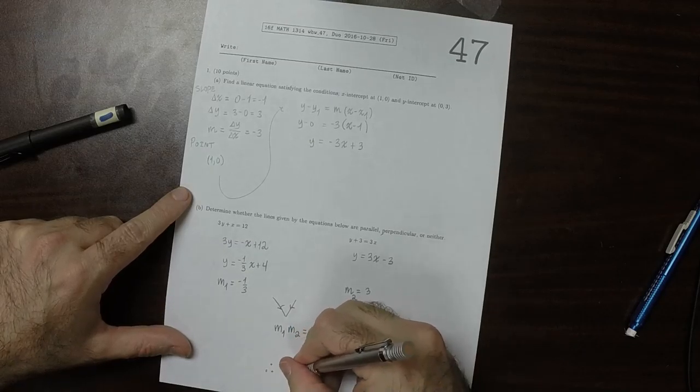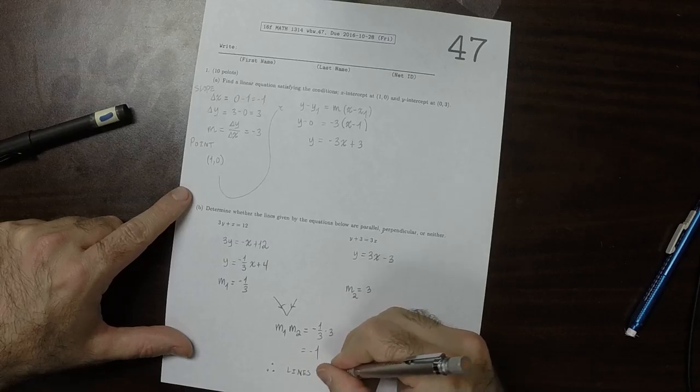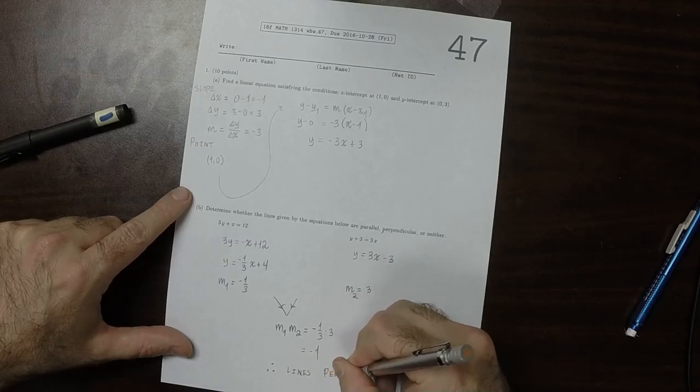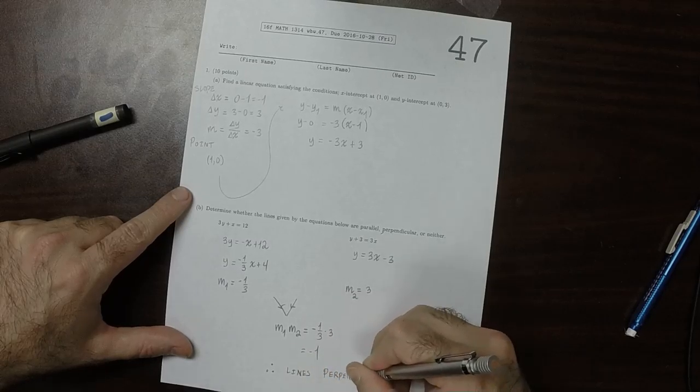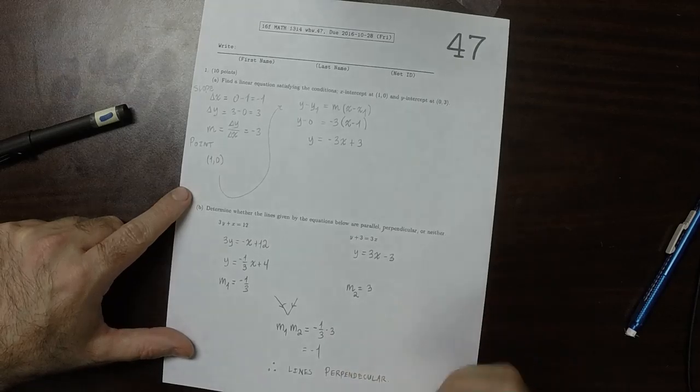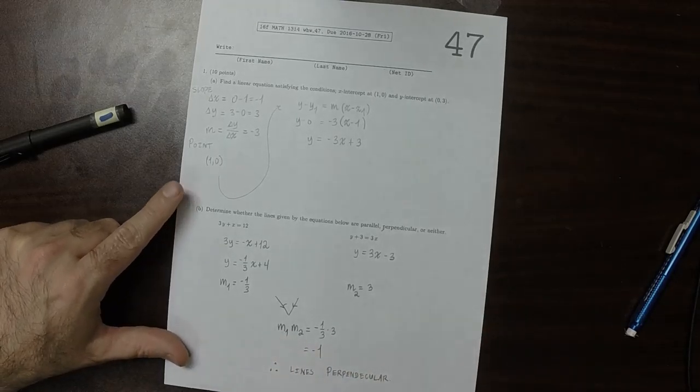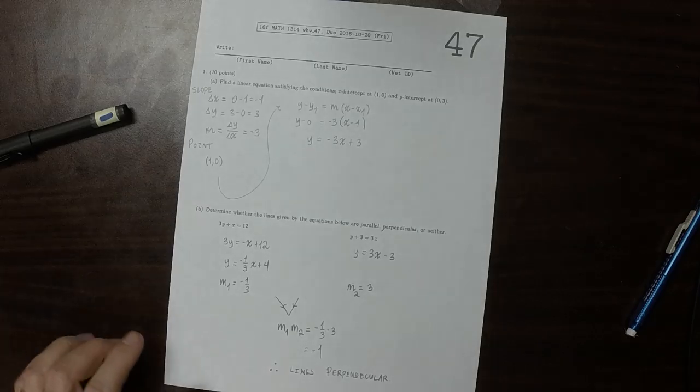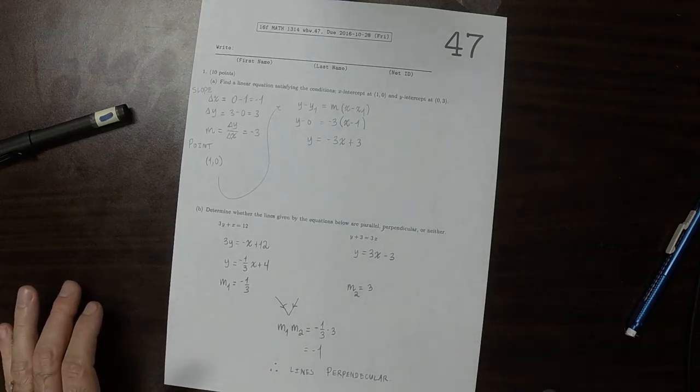And therefore, these lines are perpendicular, because if two slopes have a product of negative 1, they must be negative reciprocals of each other.